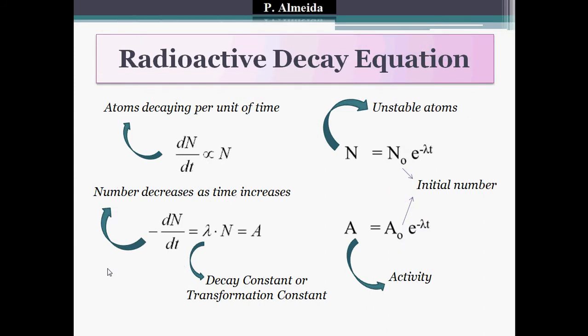Explaining these equations: the first equation says that ΔN over ΔT is proportional to N. What I'm saying is the atoms decaying per time unit is proportional to N, where N is the number of unstable nuclei. So if I have more unstable nuclei, I'm going to have a faster decay rate — more atoms decaying per second. You will see this visually when you look at the half-life graph, which is coming in a couple of slides.